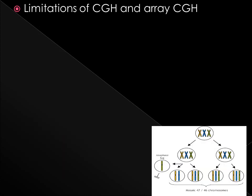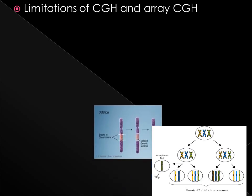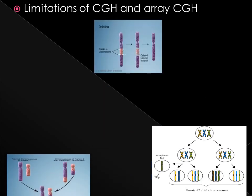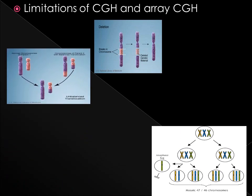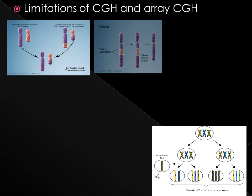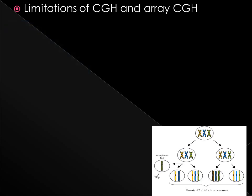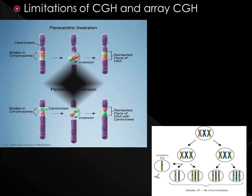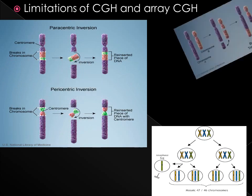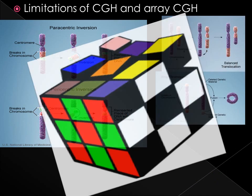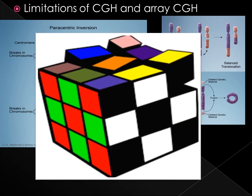Array CGH is a significant advance in technology that allows detection of chromosomal imbalances that are too small to be detected by microscope. However, comparative genomic hybridization is not suitable for detection of mosaicism, balanced translocation, and inversion. Although CGH has proven to be a useful and reliable technique in research and diagnostics of both cancer and human genetic disorders. Hope this video is helpful for understanding microarray. Thank you.